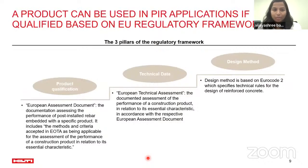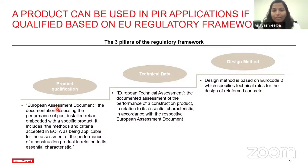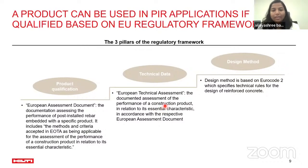The chemical product used in post-installed rebar must be qualified under a European regulatory framework, which has three main pillars. First is product qualification, where a third party assesses and tests the product and issues qualification results. This produces technical data covering product characteristics and real-time performance characteristics. That data is then used in the design method based on Eurocode 2.